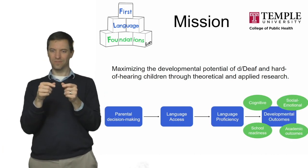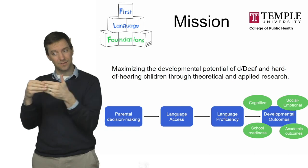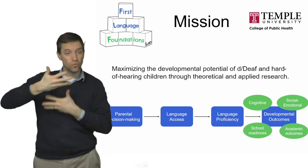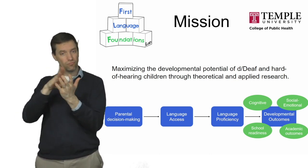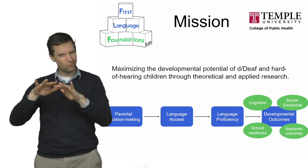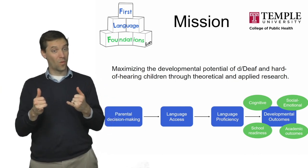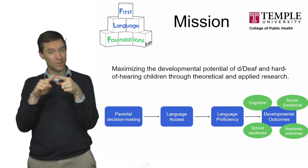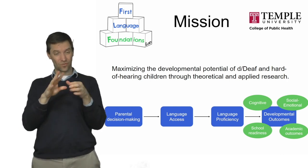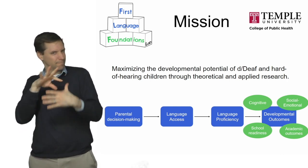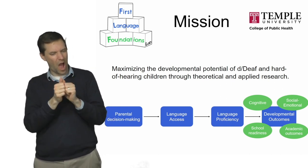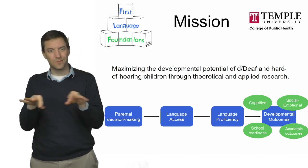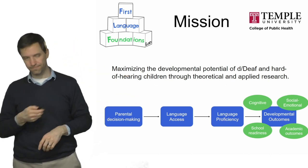We also study how the child's proficiency in language leads to development in a variety of other domains — for example, cognition, social-emotional skills, learning to read and write, school readiness, and all kinds of things. Now each of those four domains has a link to language deprivation, but that link works differently for each of them. I want to explain how each of those four things reflects a different facet of language deprivation, but they're all distinct.